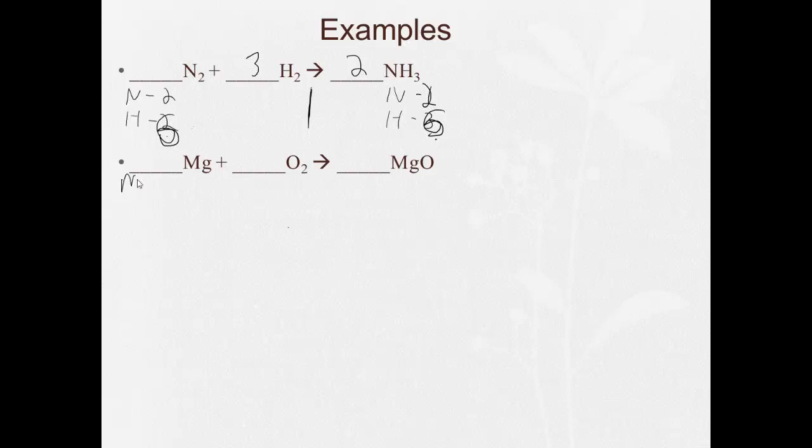So here, magnesium, I have one. Oxygen, I have two. Magnesium, I have one. Oxygen, I have one. So if I put a two here, that gives me two of each of these. And now if I put a two in front of the magnesium, that changes this to a two, and I have balance. See, I'm just going step by step.